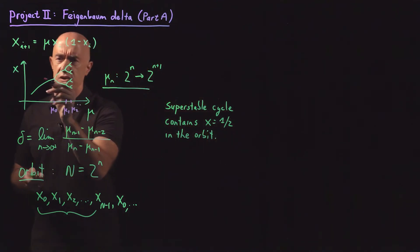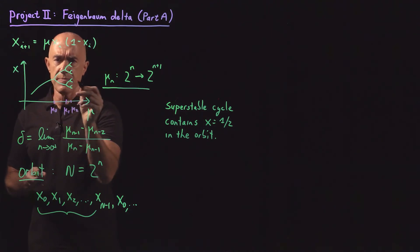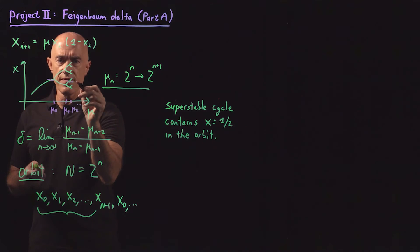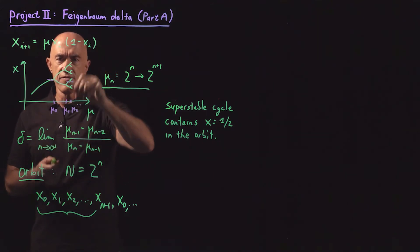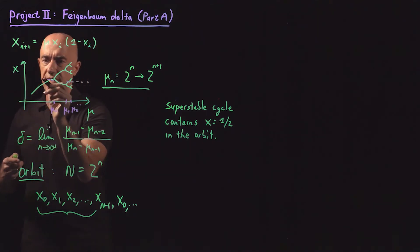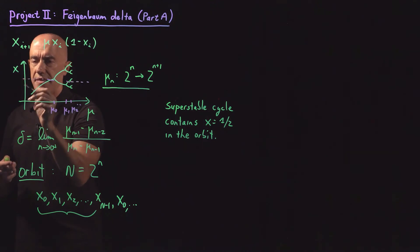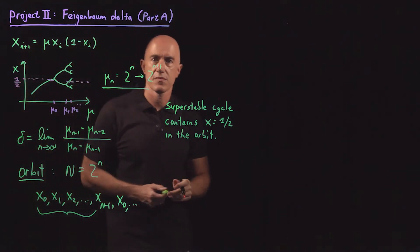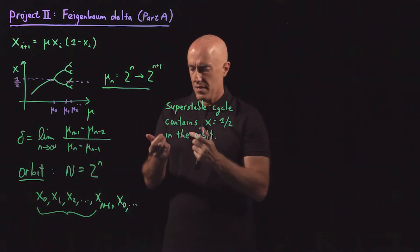So what does it mean that x equals one half is in the orbit? So that means there's some value of x that clips every one of these curves. So say, I'm just making this up, let's say here, here, here, and all of them. So every single cycle goes through this value of x, and this value of x is one half.